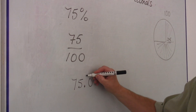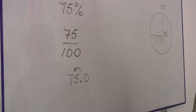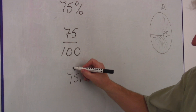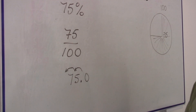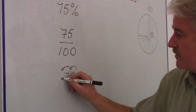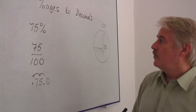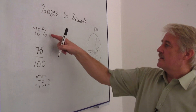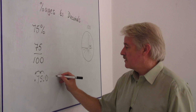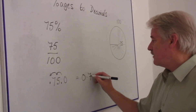To divide by 10, I would move the decimal point one place to the left. So to divide by 100, I need to move it two places to the left. So I now have the decimal point there. And therefore, my 75% becomes 0.75.